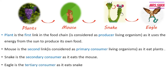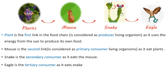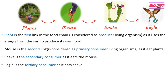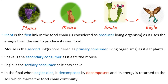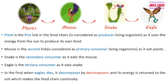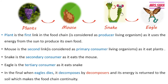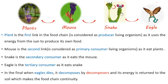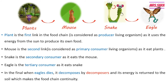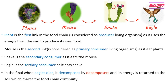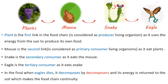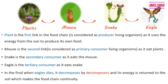The eagle is the tertiary consumer because it eats the snake. When the eagle dies, it is decomposed by decomposers, who feed on the dead body of the eagle. The energy of the dead eagle is returned to the soil, which makes the food chain continue.